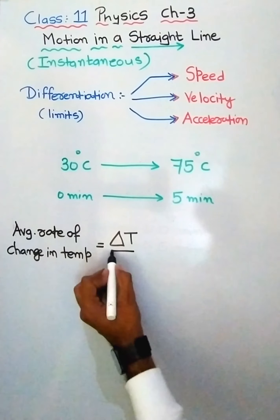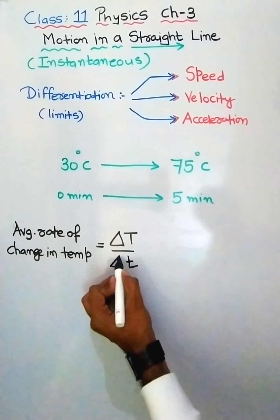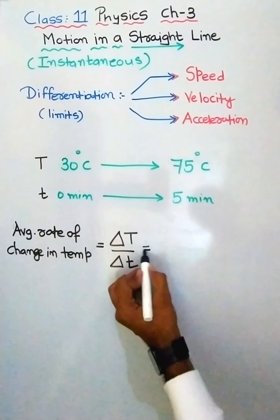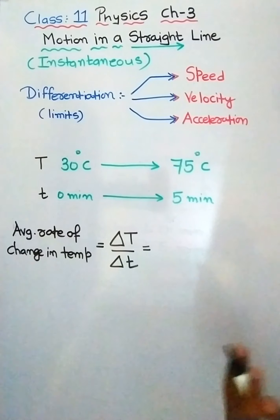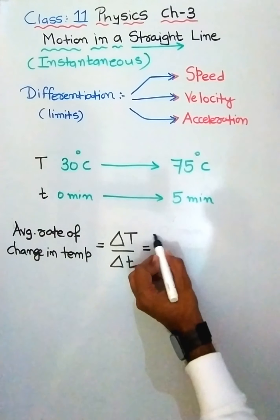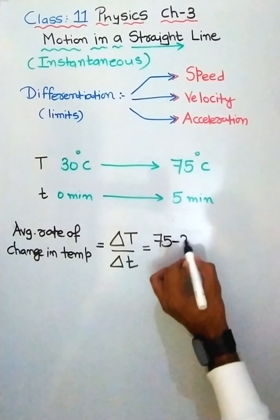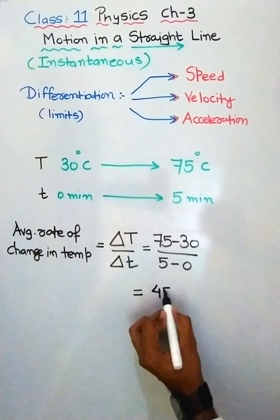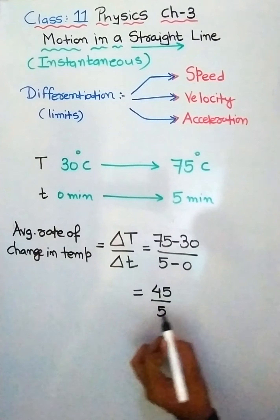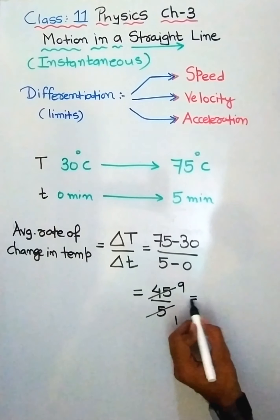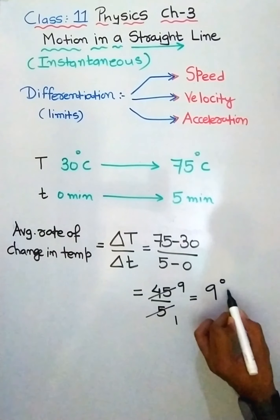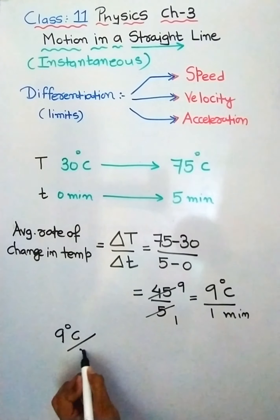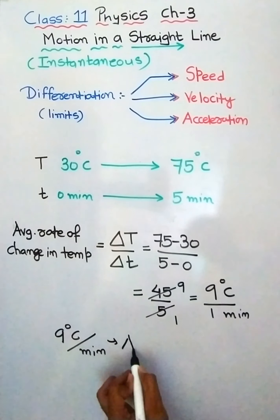So you can see there is an initial value of temperature, initial value of time, final value of temperature, and final value of time. To find the average rate of change in temperature, we find the ratio — change in temperature (capital T) upon change in time (small t). So: 75 minus 30 upon 5 minus 0, which gives 45 upon 5, and our final answer is 9 degrees Celsius per minute.